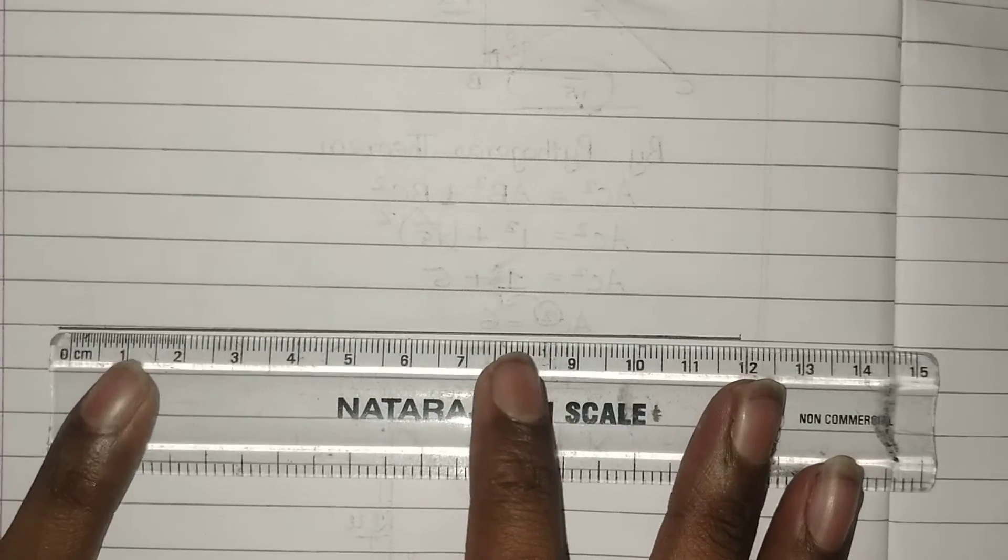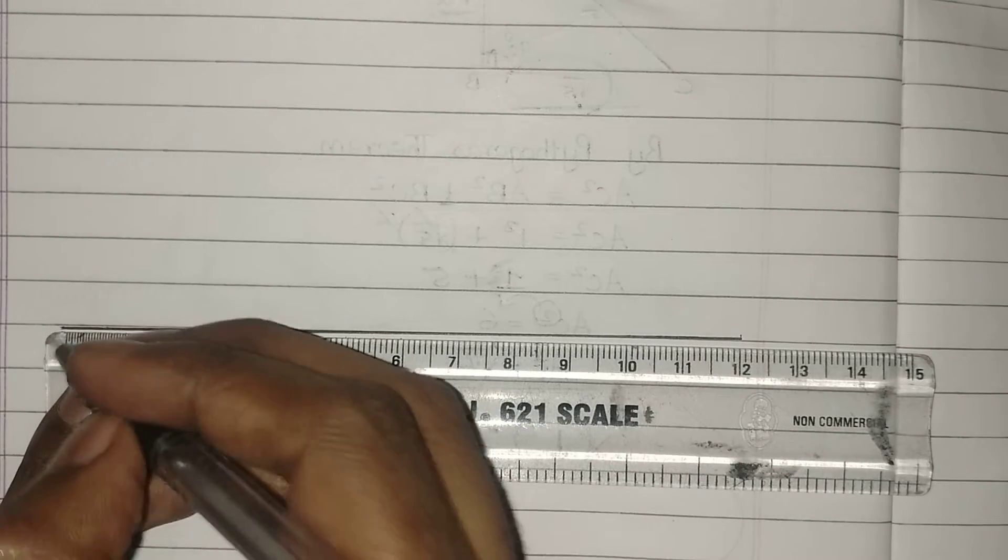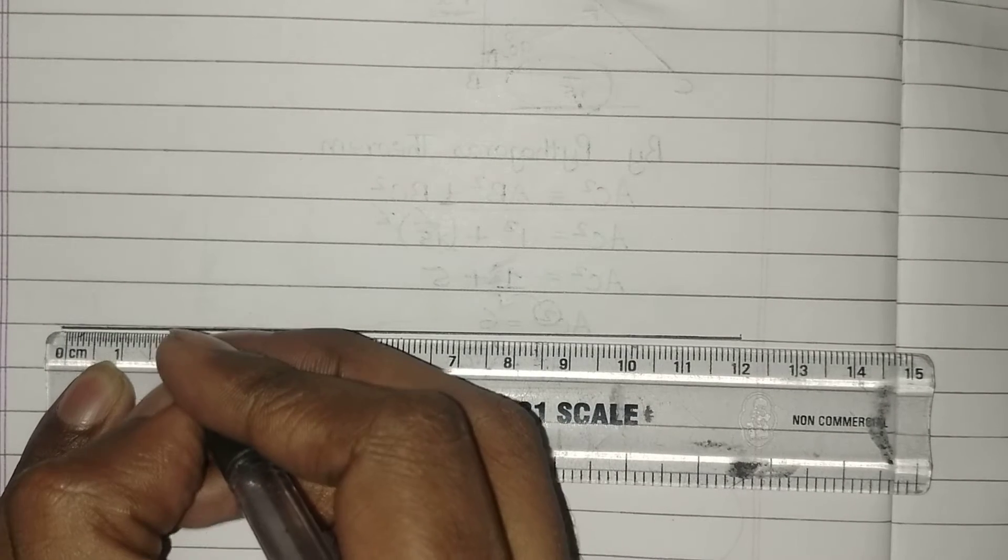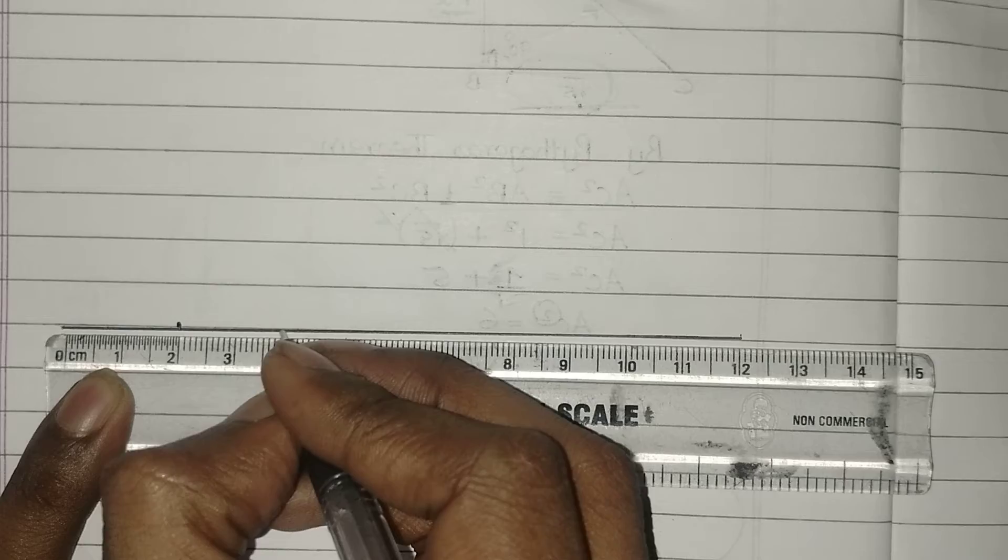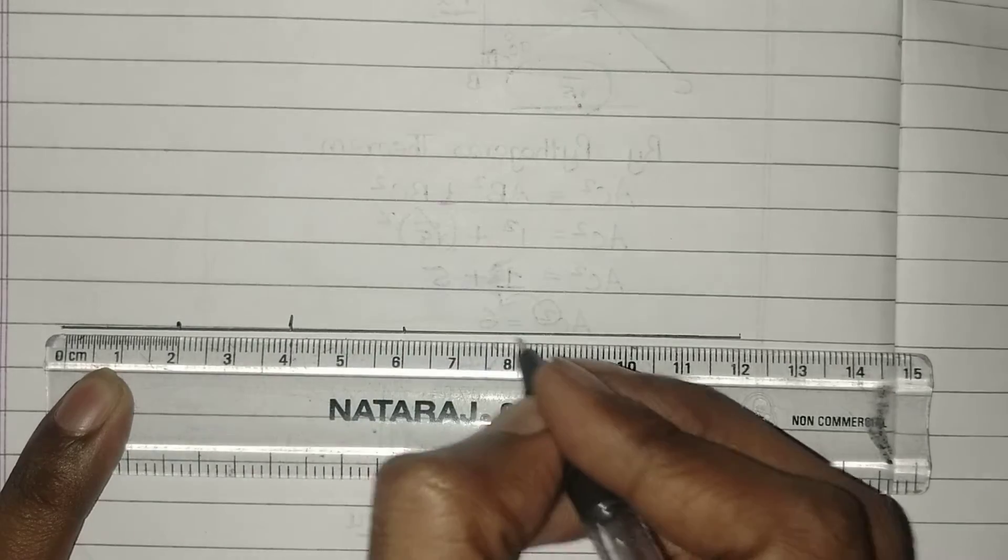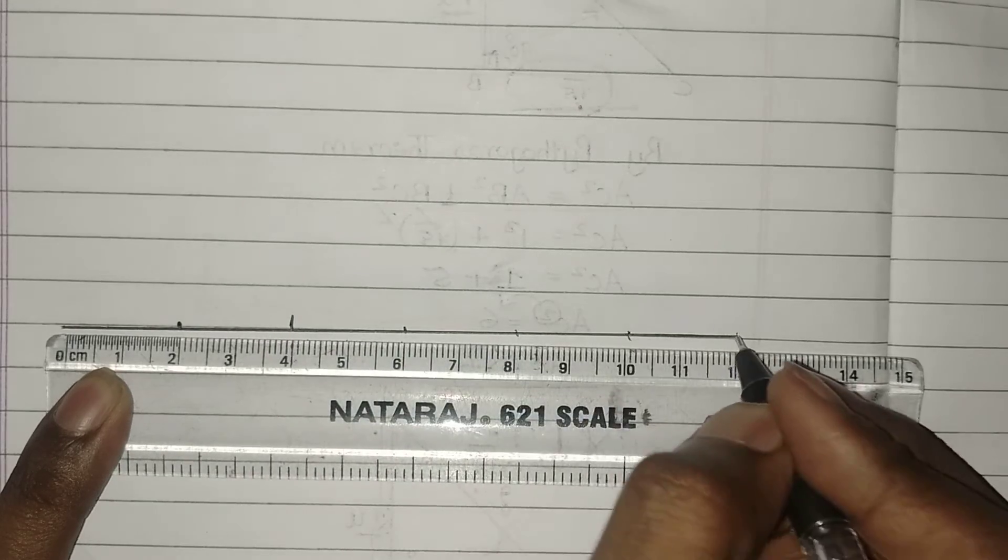I am going to take 2 cm as 1 unit. See, from 0 till 2 cm is 1 unit, 2 to 4, 6, 8, 10, 12 and so on.